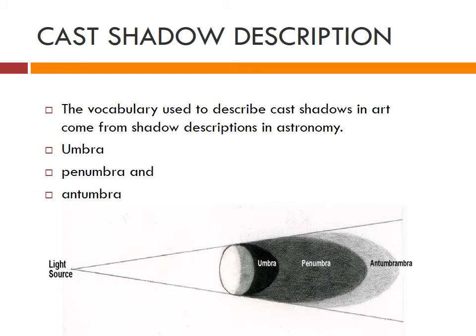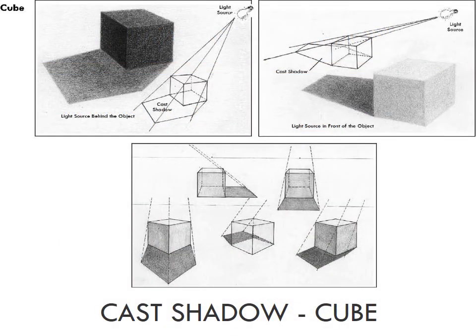Cast shadow description: umbra, penumbra, and antumbra are the names given to shadows cast by heavenly bodies. Umbra is the darkest part of a shadow, considered the absence of light. Penumbra is a lighter outer shadow where the object only partially obscures the light. The antumbra is more obscure and seems to extend beyond. Here is an example of how a cube casts a shadow when light falls on it from different angles.